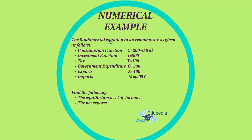It says that the fundamental equations in an economy are as given as follows. We need to find out the equilibrium level of income as well as the net exports. The components are: consumption function C equals 200 plus 0.8 Y_D, investment I equals 300, tax T equals 120, government expenditure G equals 200, exports equals 100, and imports M equals 0.05Y.